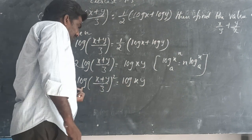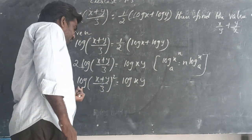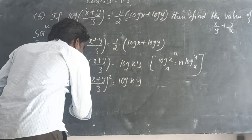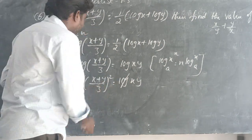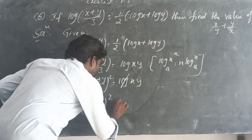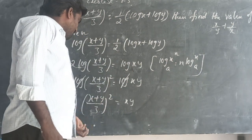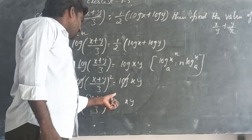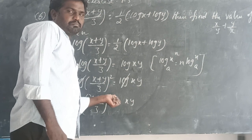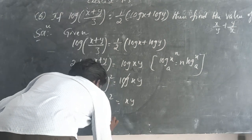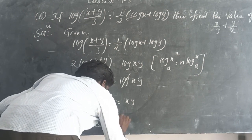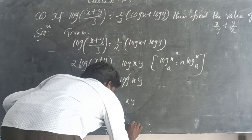Both sides have log, so logs cancel out. Then (x+y)/3 whole square equals xy. Using the formula (a/b)² equals a²/b², we get (x+y)² by 9 equals xy.